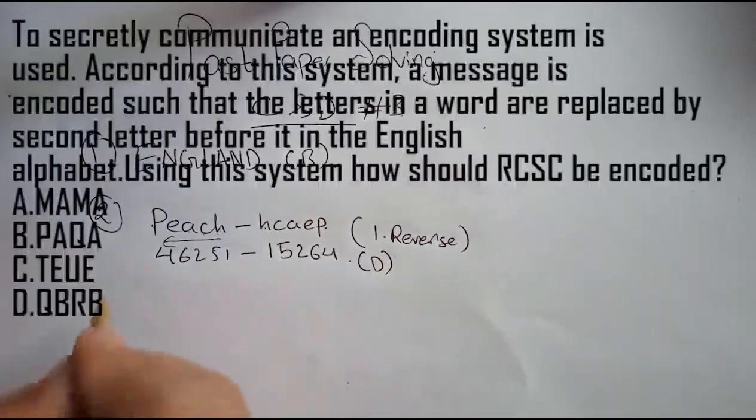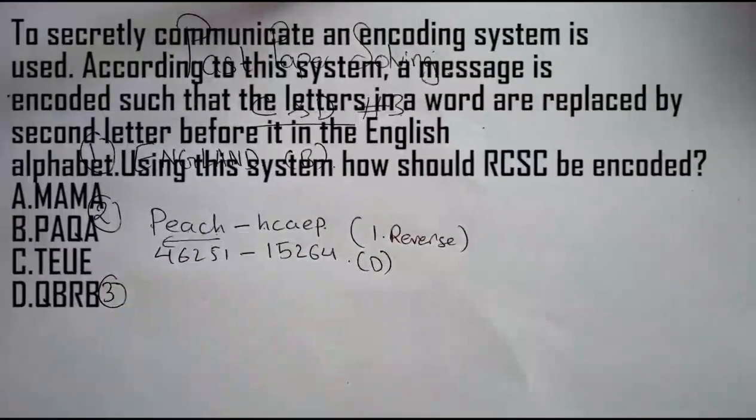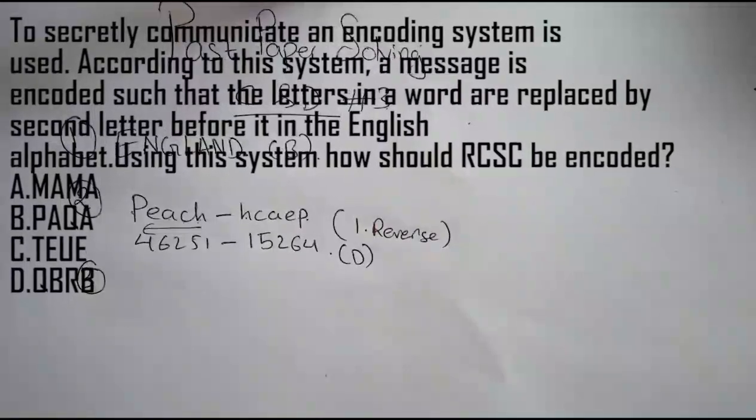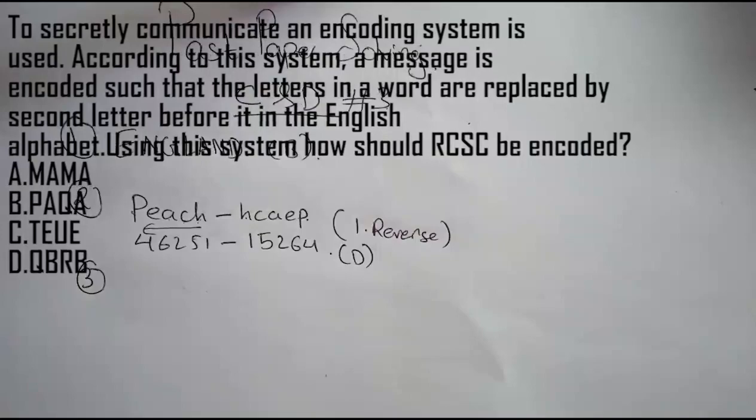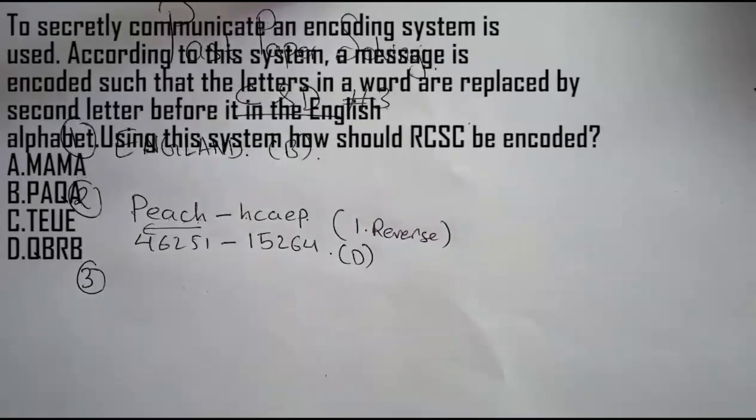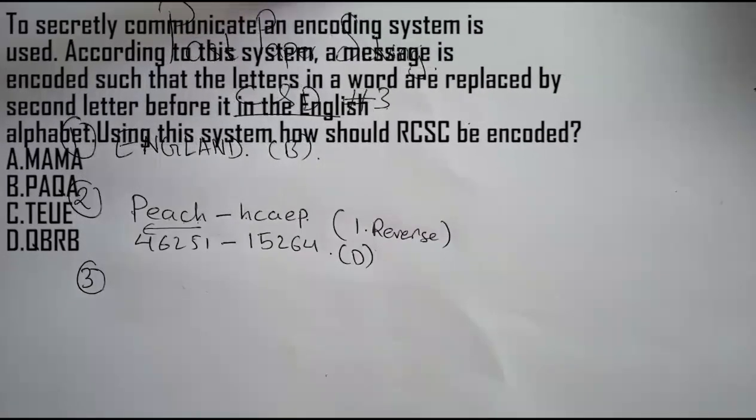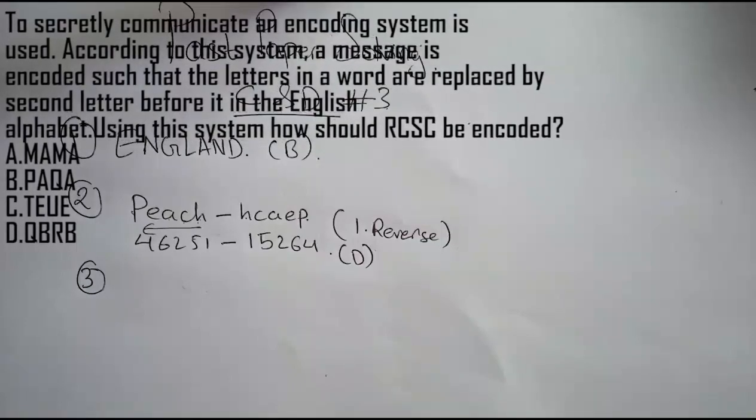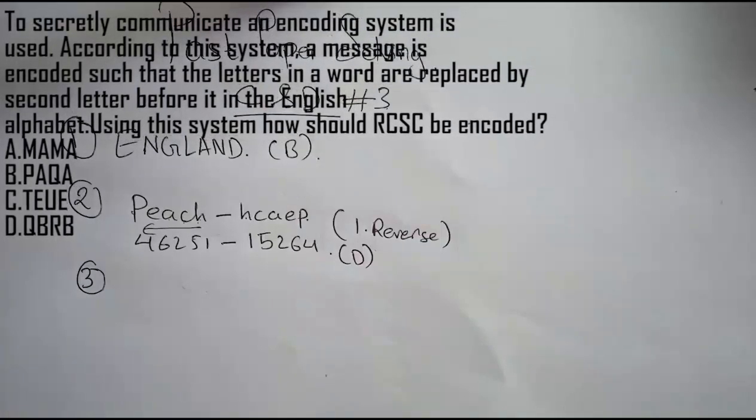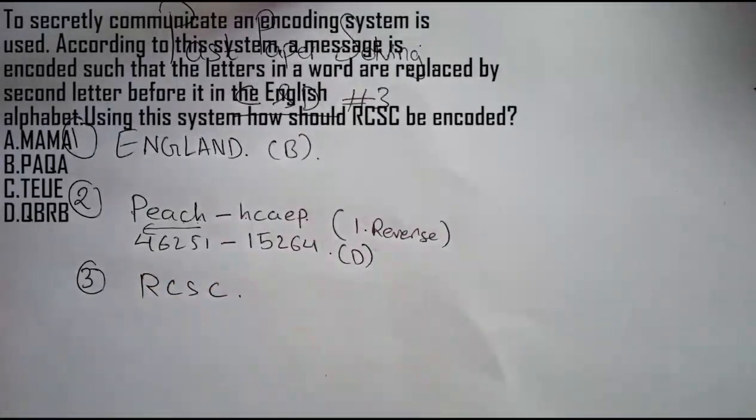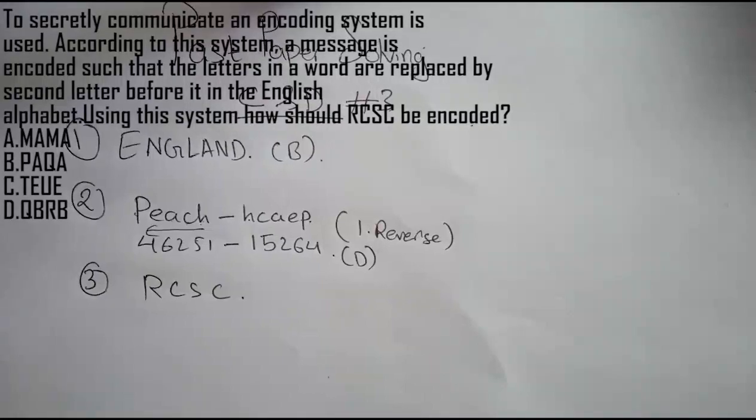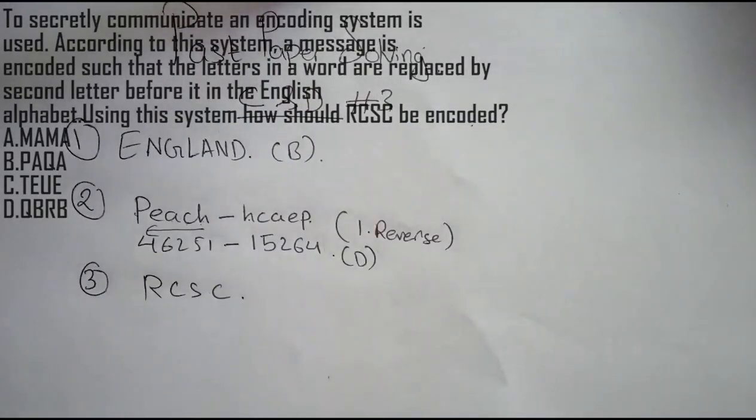Question three: To secretly communicate, an encoding system is used. According to this system, a message is encoded such that the letters in a word are replaced by the second letter before it in the English alphabet. Using this system, how should RCSC be encoded?